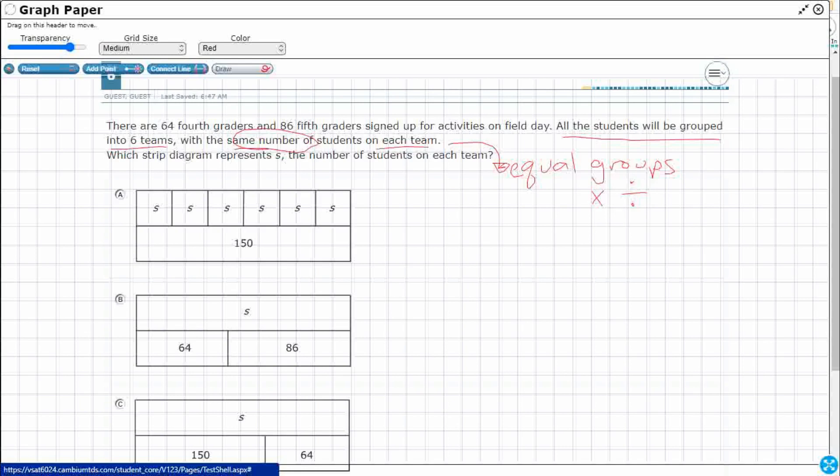Which strip diagram represents the number of students on each team? Well how many teams are there? There are six teams. So I'm just going to put some boxes here. I've got six boxes and I need to put the same number in each.